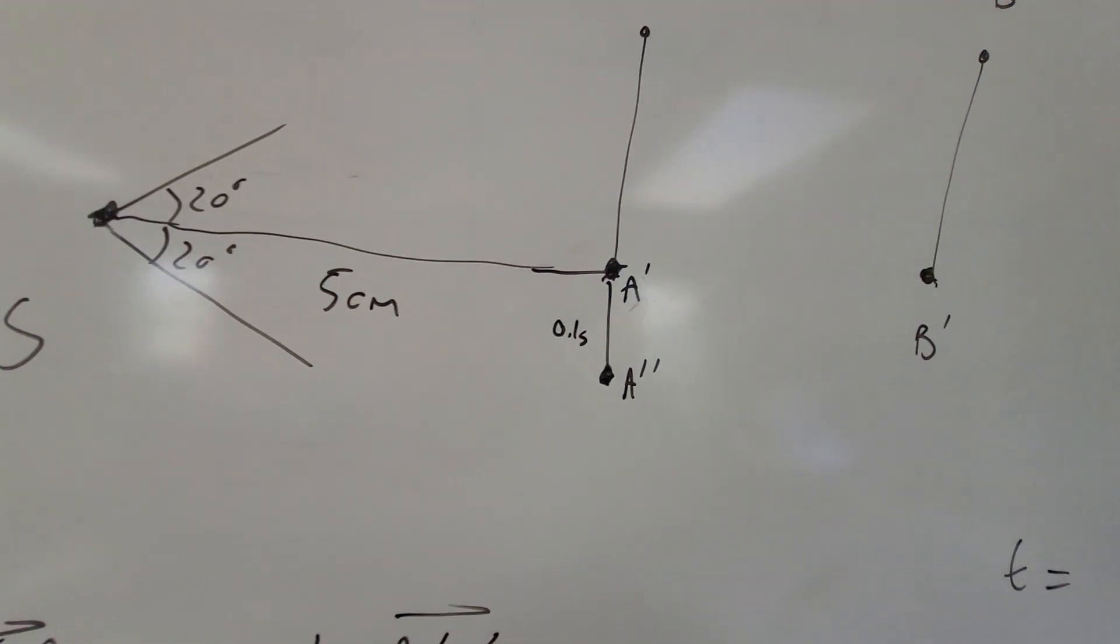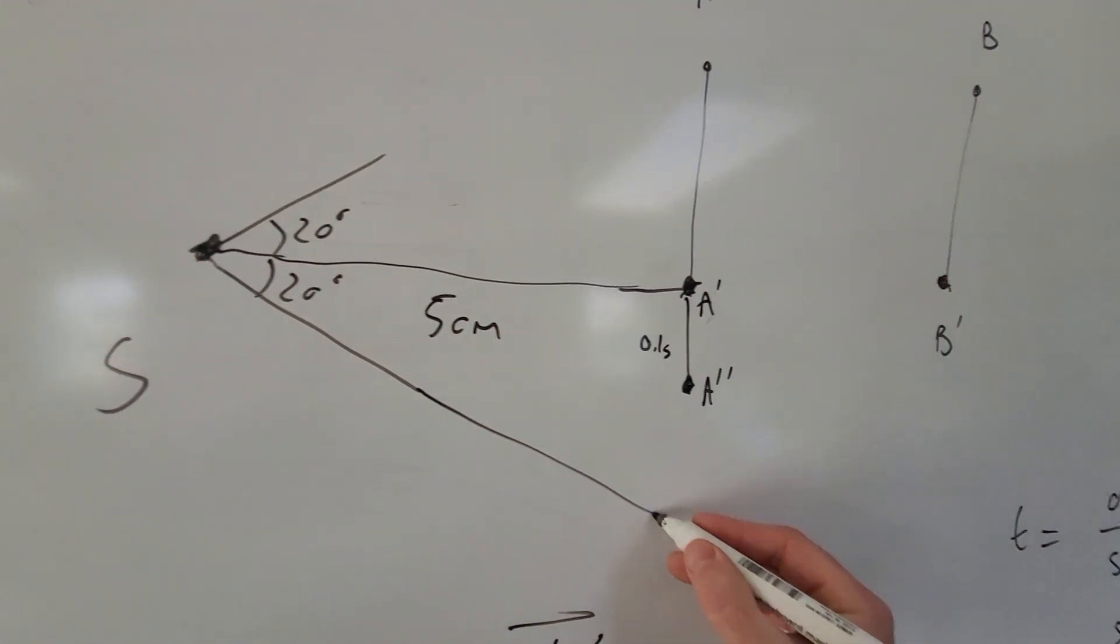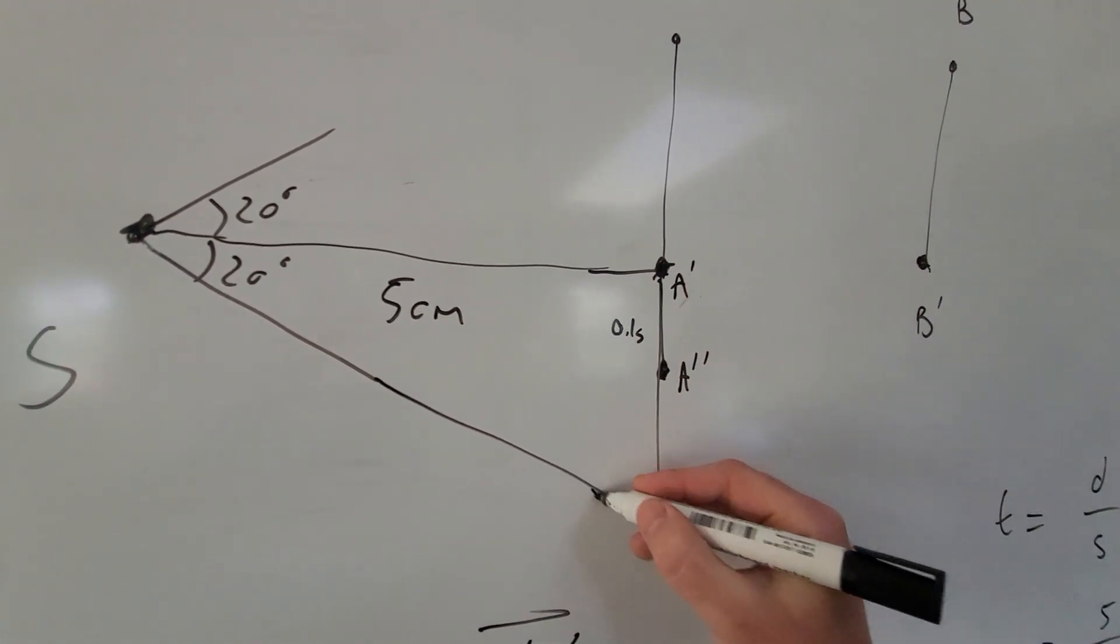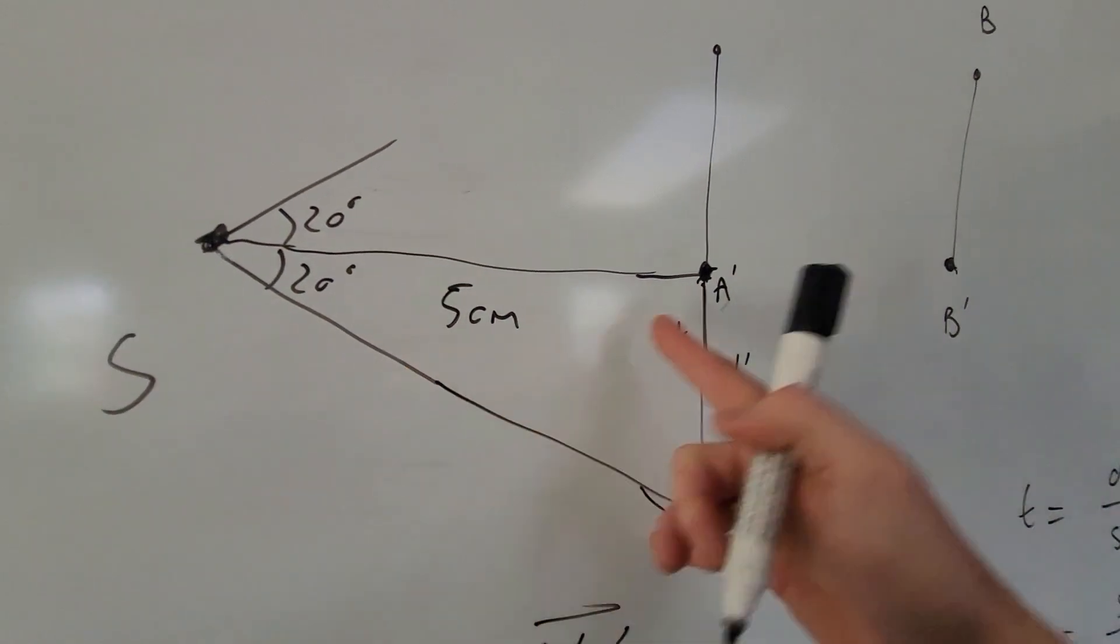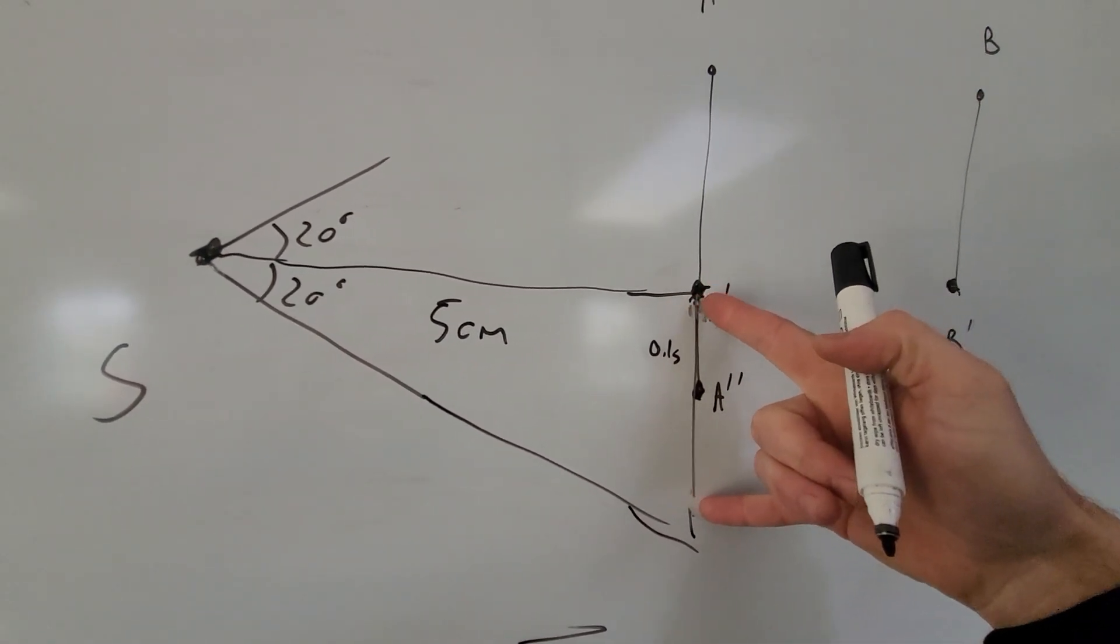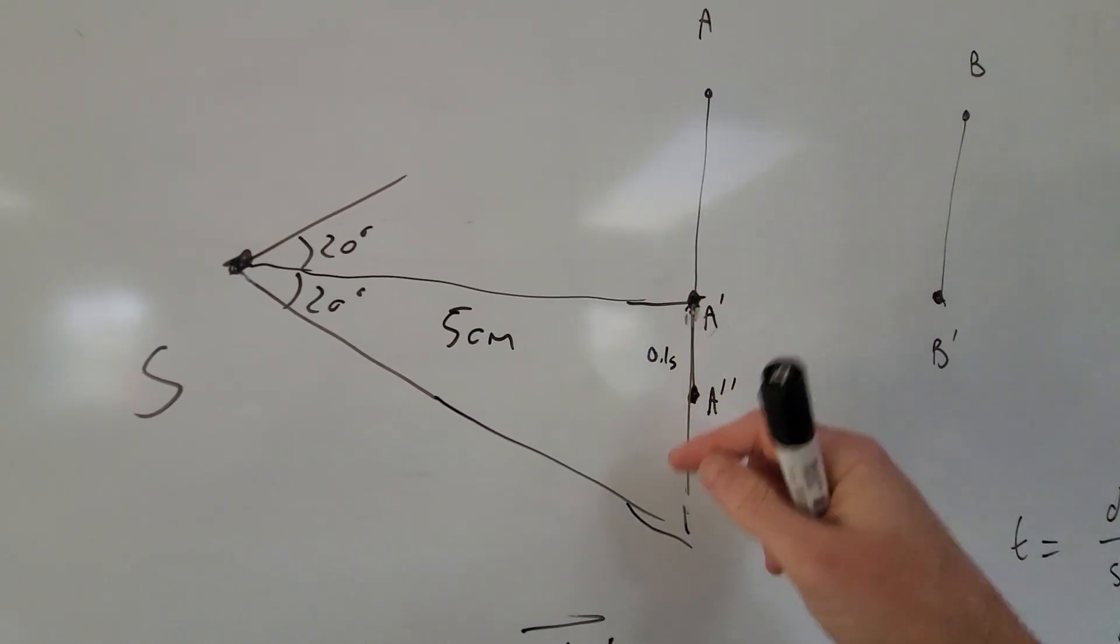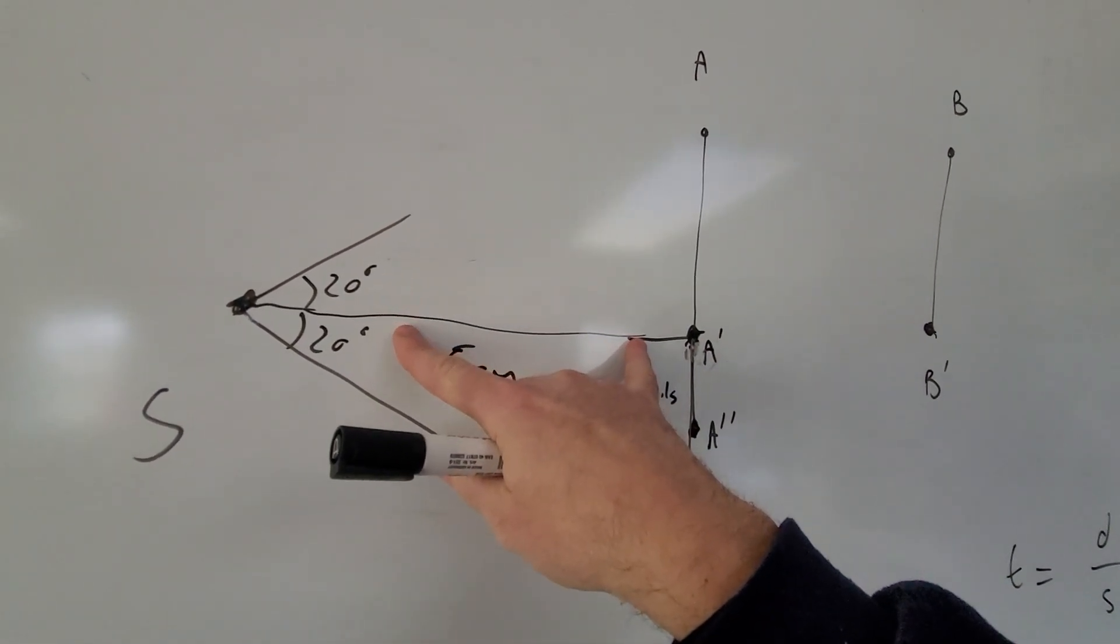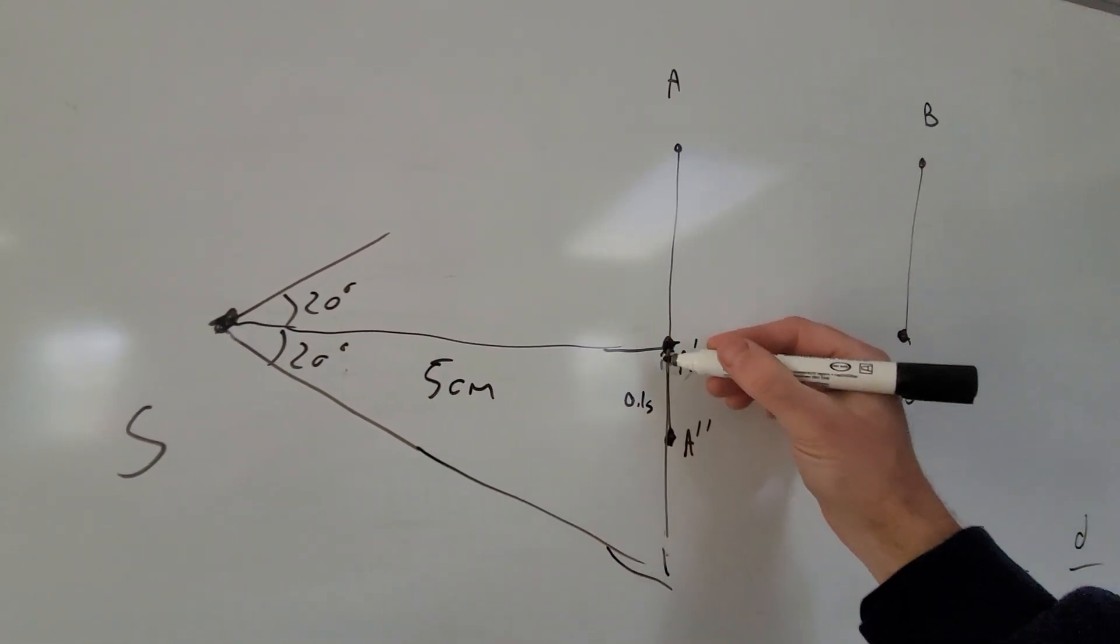All we have to do then is go, all right, now, is this new position, does this new position lie within this distance that we would expect here? Now, we can calculate this distance, this distance here, because we know this is 5 centimeters and we have this is 20 degrees and this is approximately a right angle. So if we abstract that triangle out,